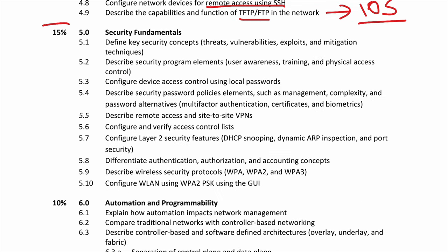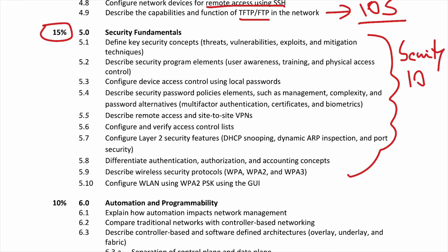Section 5 is Security Fundamentals, about 15% of the exam. This is essentially Security 101 — the very basic security elements you need to have under your belt in order to understand more advanced security later at a CCNP level.